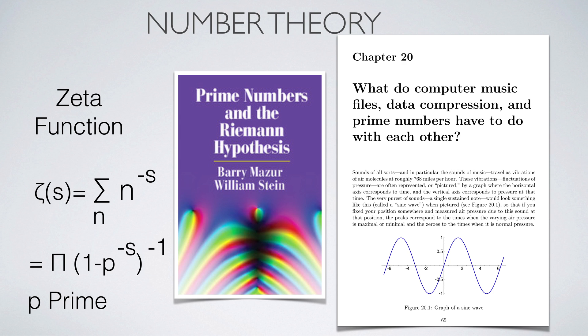The zeta function encodes the prime numbers. Still a lot of problems are in the dark, like the location of the roots of the zeta function. The Riemann hypothesis is the most important open problem.